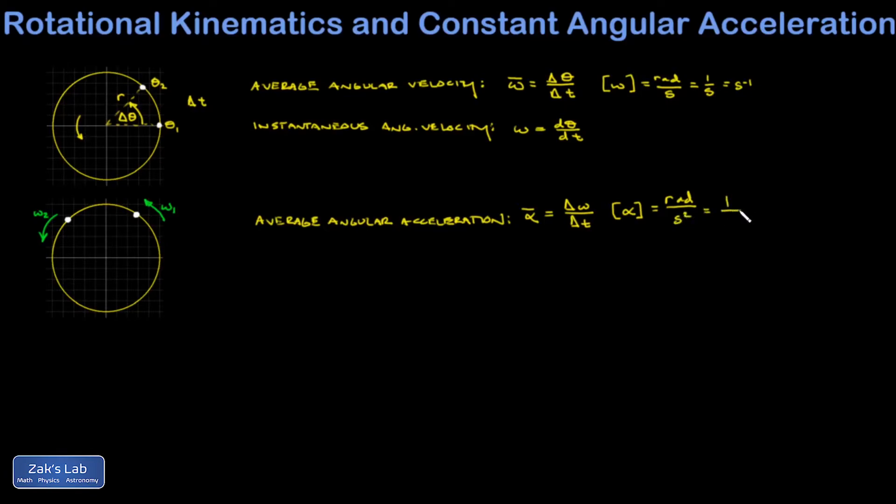Again, radians are technically unitless. It doesn't cause any harm to write them down, but you should remember that you can disappear them whenever you like. So the units of angular acceleration are 1 over second squared. Now we could take the small time limit and define instantaneous angular acceleration, and that's going to be alpha equals d omega dt, the time derivative of the angular velocity, or we could write it as a second derivative of the angular position.